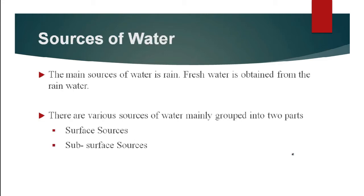First we will see the sources of water. There are various sources of water, but all these sources are mainly depending on rain. Water which comes from rain is 100% pure and fresh water. On the basis of storage, sources are divided into two categories: surface source and subsurface source of water.